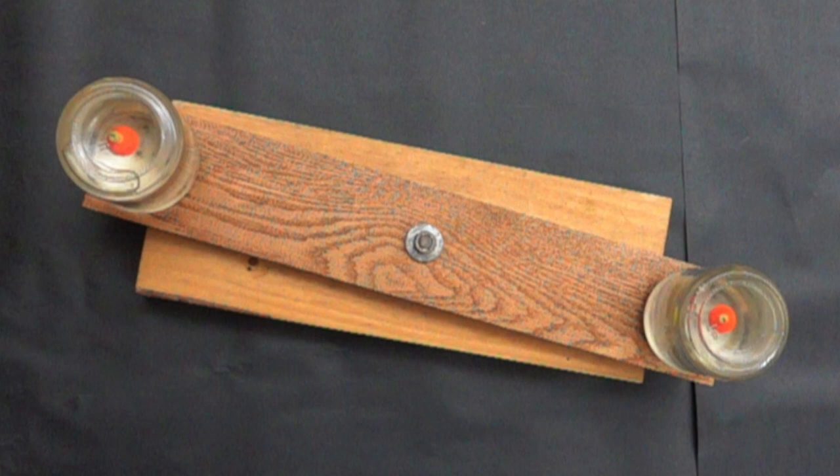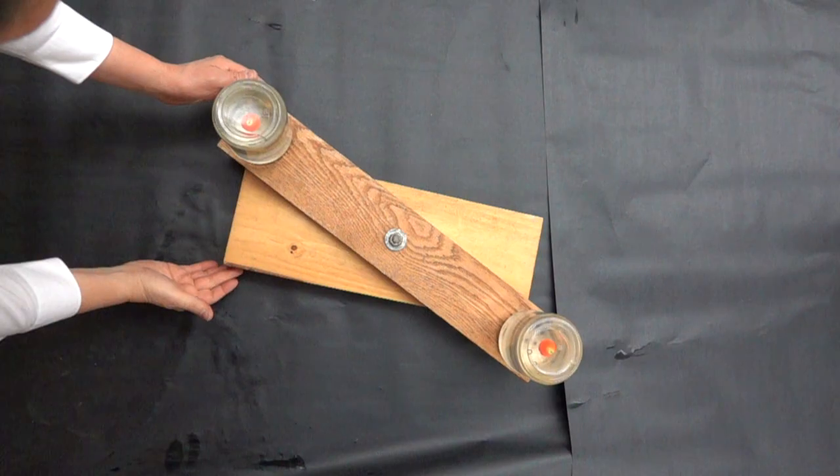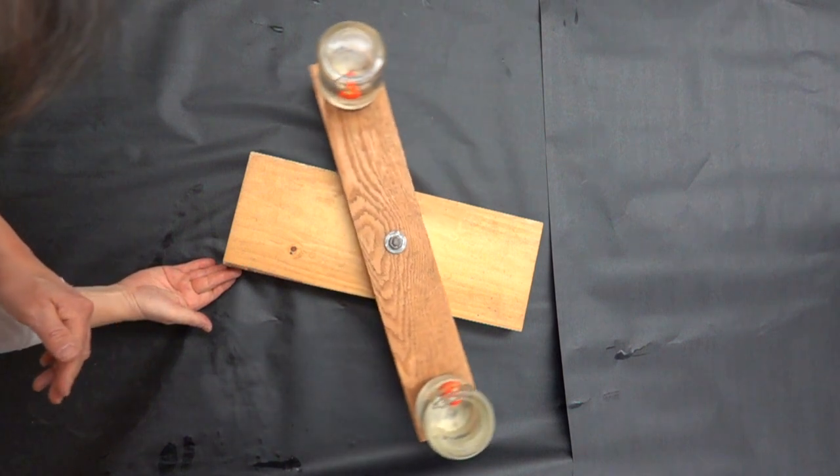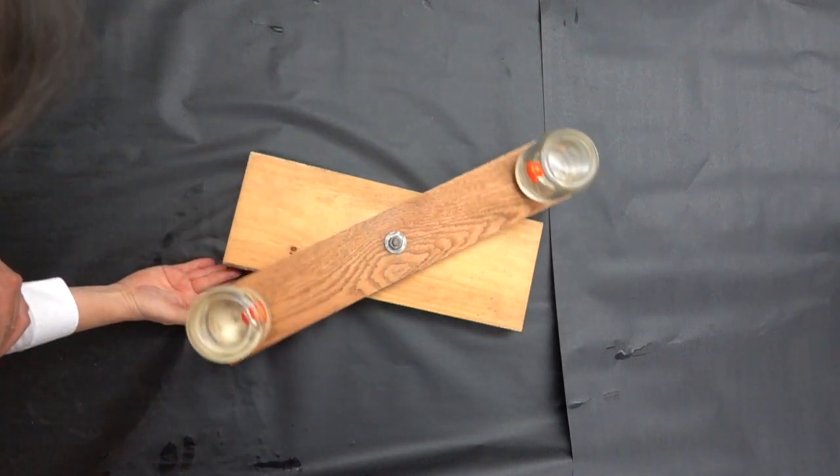When the rotor is stationary, we can see the bobbers are located in the center of the jars. But once it starts moving, we'll notice that they move towards the center of rotation. That's because they're less dense than the water.